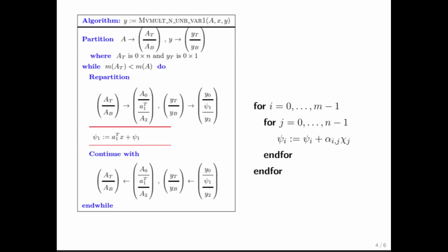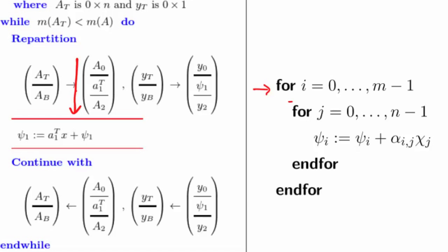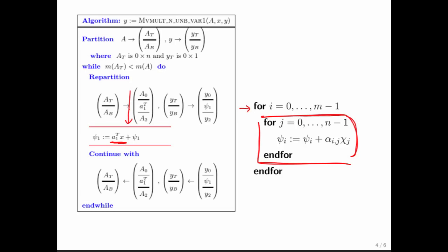We can also compare how we express the matrix vector multiplication with the flame notation versus the loop. Now, what's going on here? This outer loop is exactly the loop that marches matrix A down the rows. And notice that this inner loop is completely hidden. Where is it? It's inside of this dot product right here. So only one loop is exposed.